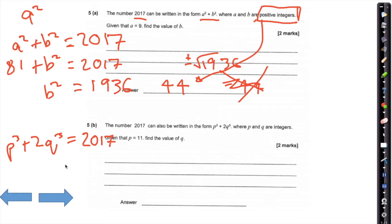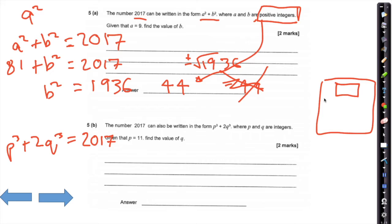Given that p is 11, we can work out 11 cubed. On your calculator, underneath alpha you'll see an x cubed sign. Type in 11, then press that cubed sign and press equals — that will be 1,331. So 1,331 plus 2q cubed equals 2017.